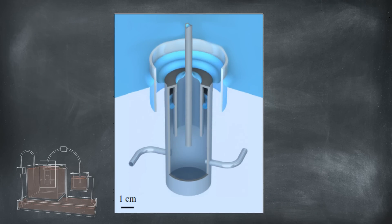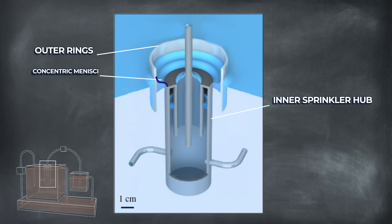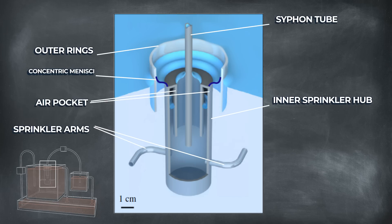This is what his experimental setup looked like. The outer rings hold the sprinkler in place, centralizing the inner sprinkler hub through the concentric menisci. The siphon tube and arms allow the liquid to flow through, and a small amount of air at the top of the sprinkler hub allows it to float.